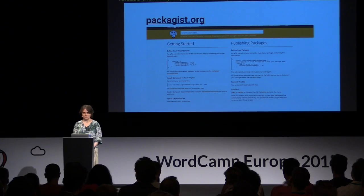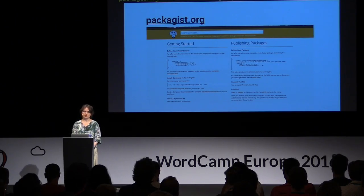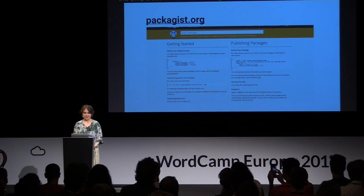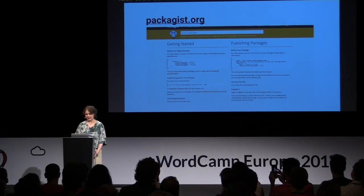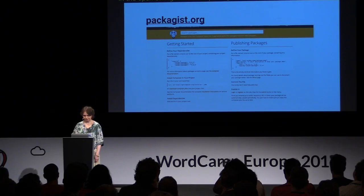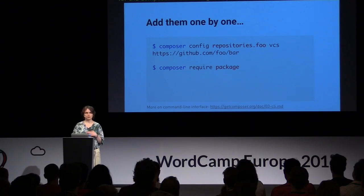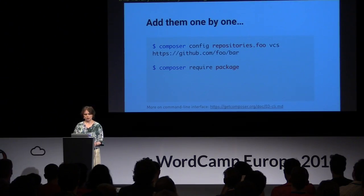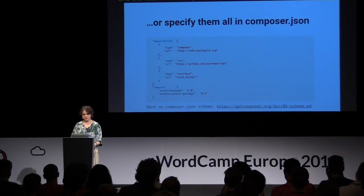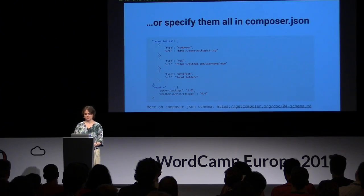There is packagist.org — the central, official registry for Composer. It provides a simple search interface through packages, and even the WordPress core itself can be found there and used as a dependency. In your configuration, packagist.org can be omitted because Composer looks through it by default. You can add libraries to your project using command-line commands, adding them one by one and specifying the type, address, and each dependency. But the more convenient way is to specify them manually in the configuration file.